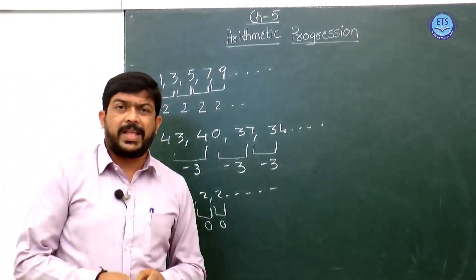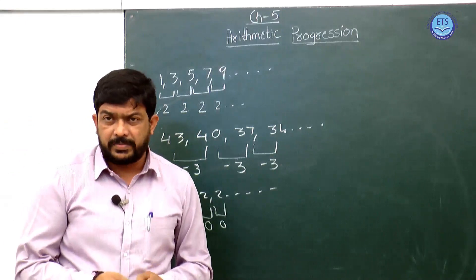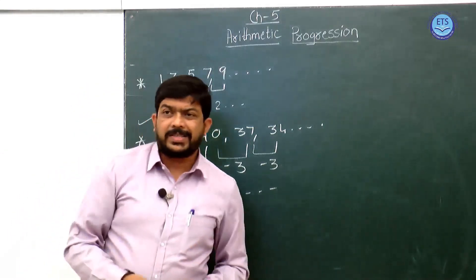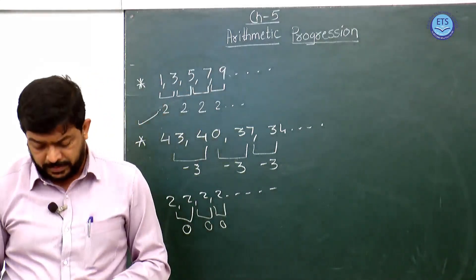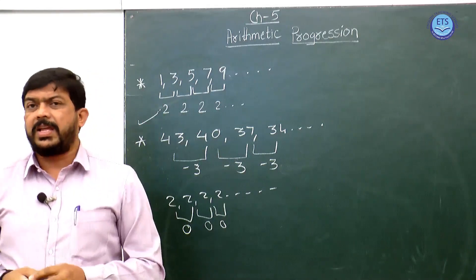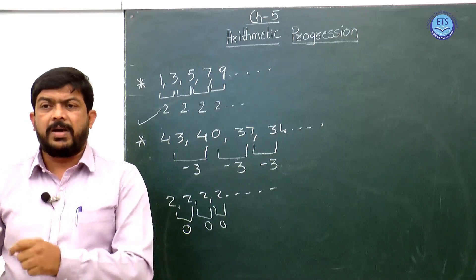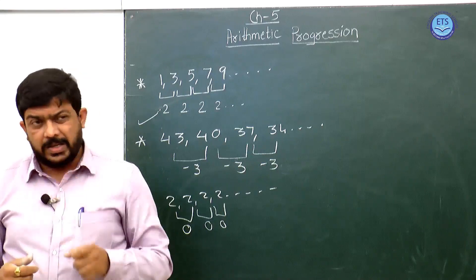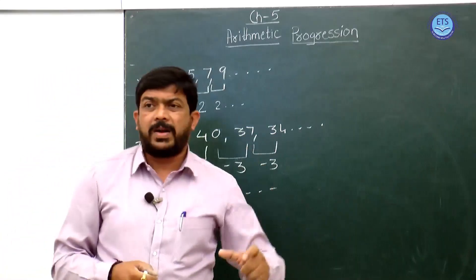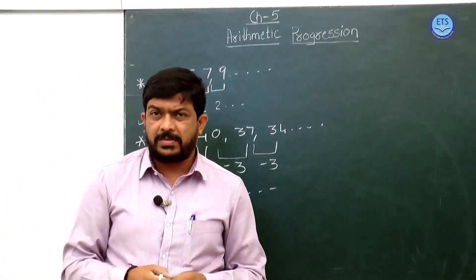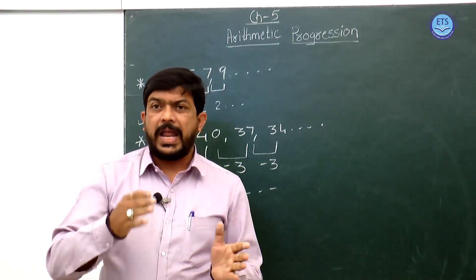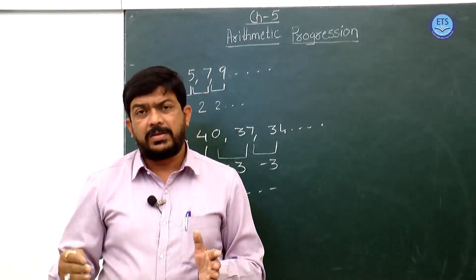This is called your Arithmetic Progression. It is a list of numbers in which each term increases by a fixed number — that is called an Arithmetic Progression. The fixed number is called the common difference, which can be positive, negative, or even 0.